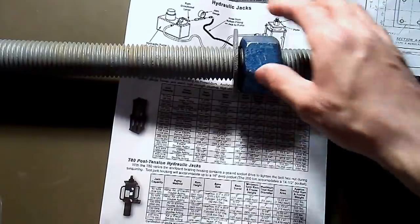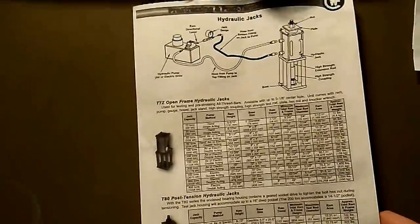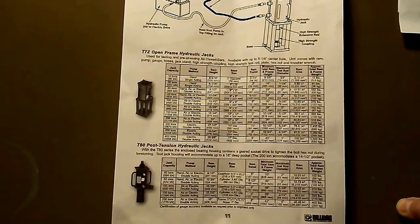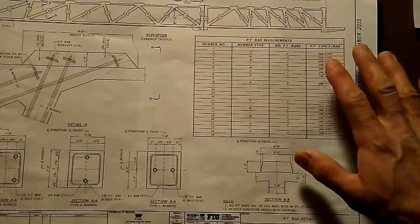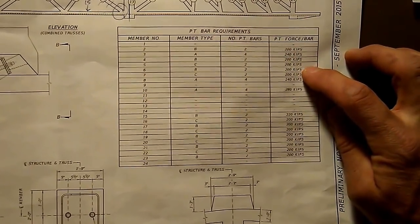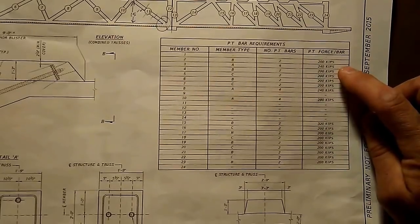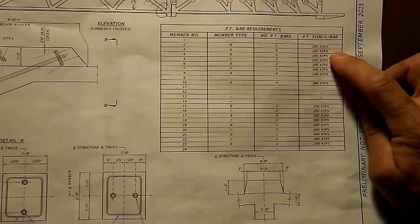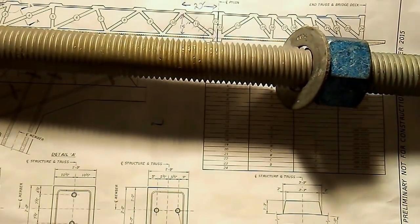What I want to show you next is how much stretch needs to be performed in order to achieve the correct post-tensioning amount. We know from the drawings — preliminary drawings, but accurate ones — that the post-tensioning forces are all around 200 kips. We know a one-and-three-quarter inch diameter bar can approximately take 400 kips of tension before it fails. So we're going to about half of its ultimate strength when we stretch to 200 kips in tension. To get to 200 kips in tension, you have to stretch this bar by a certain amount, and that's what I'm going to show you next.